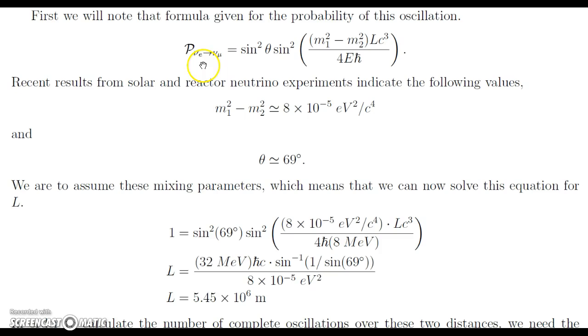So we have this probability here, and we're going to set it equal to 1. It's possible that the probability is not 1, it can go anywhere between 0 and 1. However, we're going to assume that to make sure we want to find the length to know that we are certain that we will get this oscillation. So once we have this, we can solve for L, and we get that L is equal to 32 mega electron volts times h bar C times the inverse sine of 1 over sine of 69 degrees, all over 8 times 10 to the negative 5th electron volts squared. When we calculate all of this, we get the length is equal to 5.45 times 10 to the 6th meters.